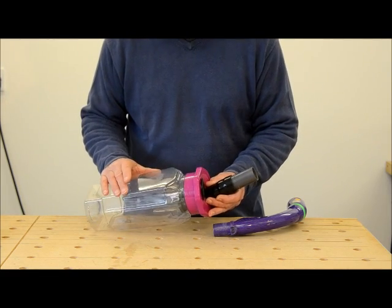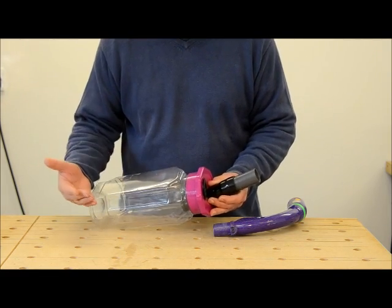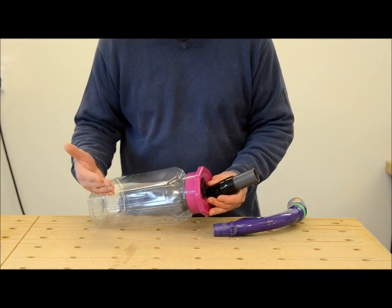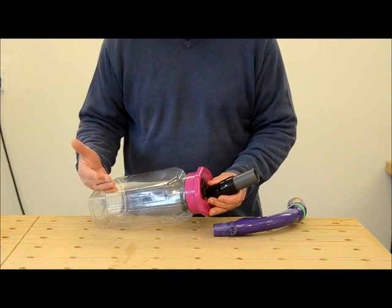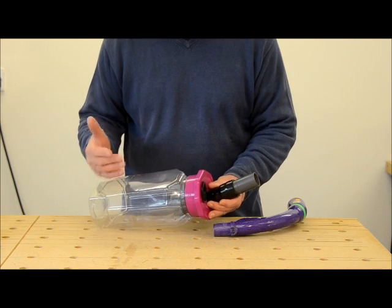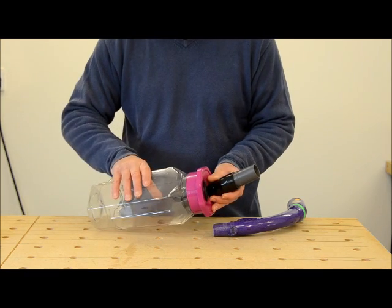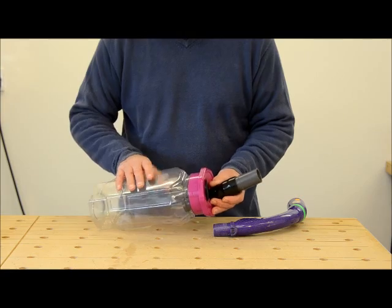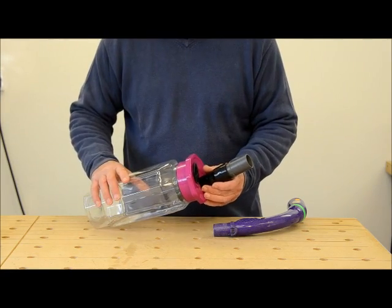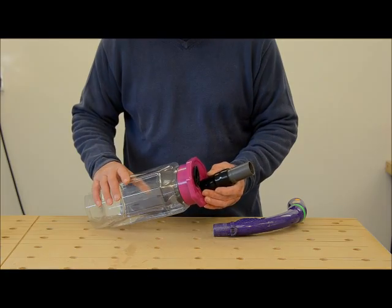And that's what would happen with a cyclone if your inlet hose became blocked and your vacuum attached to your cyclone then started to suck all the air from the cyclone itself. It would collapse. So let's see how we can overcome that by making a pressure relief valve.